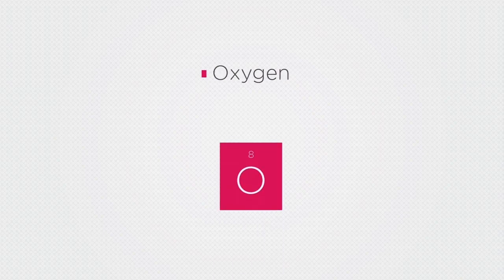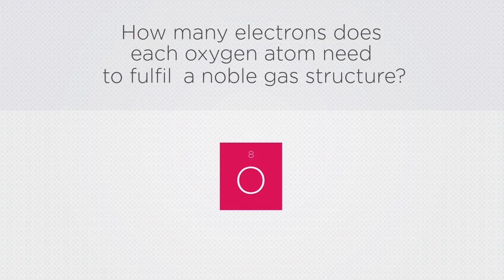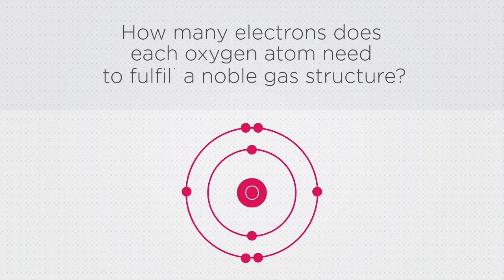In the next example we are going to consider oxygen. It's in group 6, therefore how many electrons does each oxygen atom need in its outer shell to fulfill a noble gas structure? Remember, oxygen has eight electrons in total, so we would need to fill the second shell.